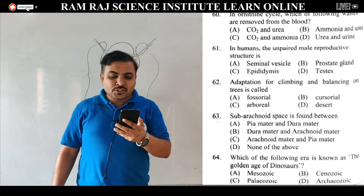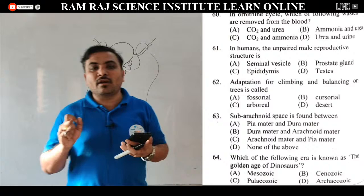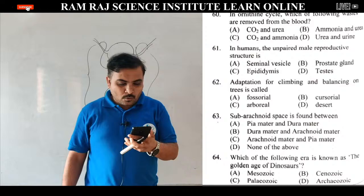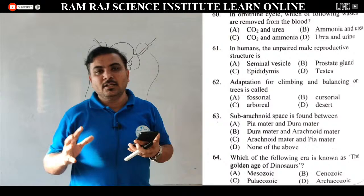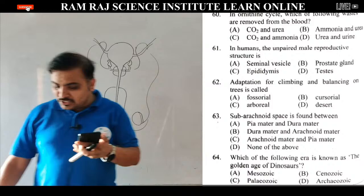Question number 62: adaptation for climbing and balancing on the trees is. Fossorial — this is the adaptation for living in burrows, typical example rats. Cursorial — this adaptation is for fast running, typical example cockroach. Arboreal — this is the adaptation for living and balancing on the trees. Desert adaptation is for life in deserts. So the answer is arboreal.